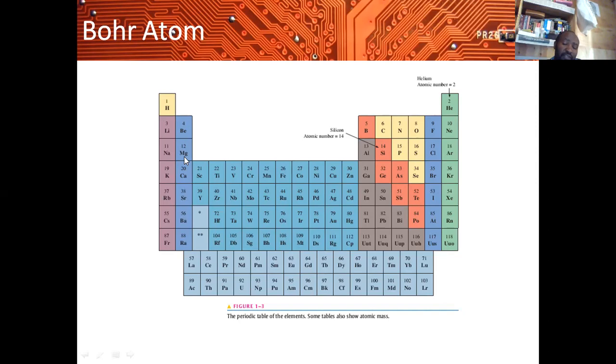These are called transitional elements. Then we have group three elements which have three electrons in their valence shell. Group four elements have four electrons in the valence shell. In electronics, group four elements are of significant importance because these are the elements which make the semiconductors. Then we have group five, six, seven, and eight elements and so on.